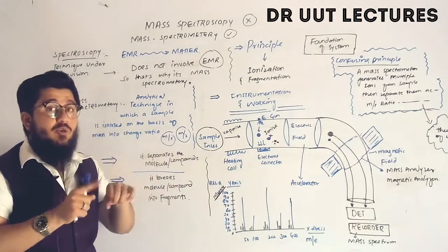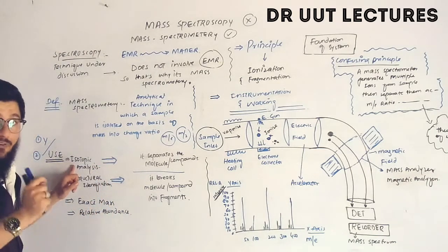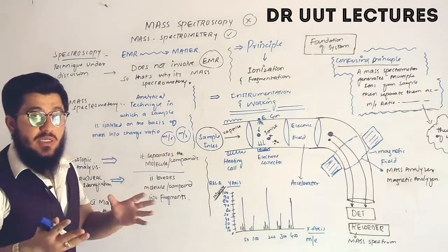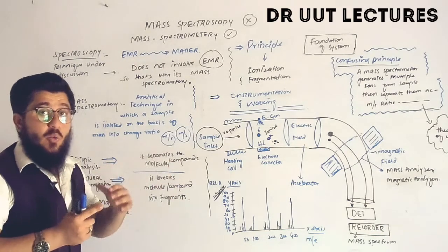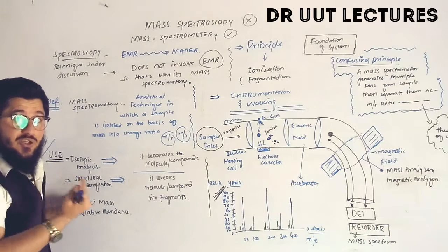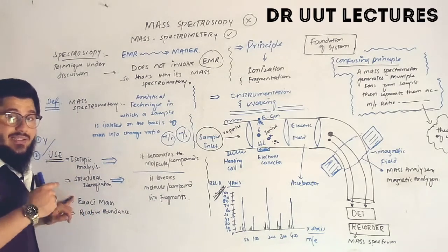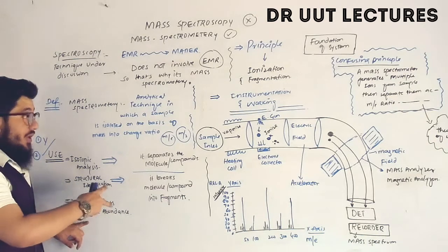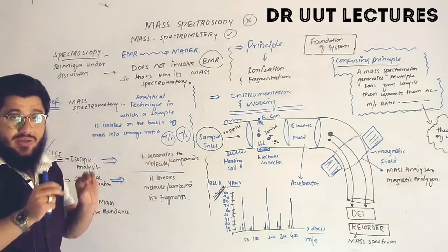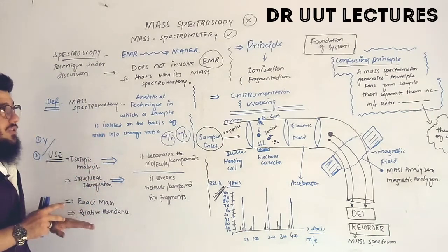Why do we isolate our sample? For isotopic analysis — isotopes have the same atomic number but different mass numbers, so we isolate to find different masses. We also isolate for structural identification, to know what kind of structure a molecule has, and to calculate exact mass or relative abundance. These points can also serve as the uses of mass spectrometry.